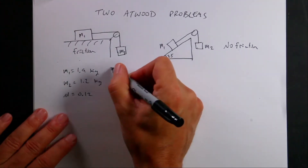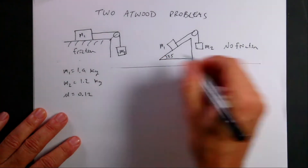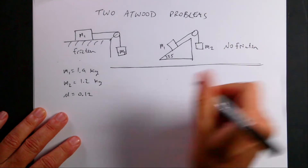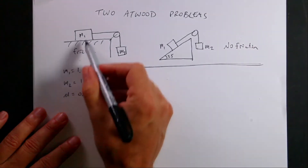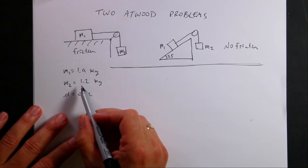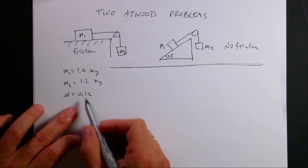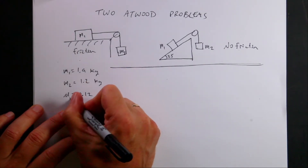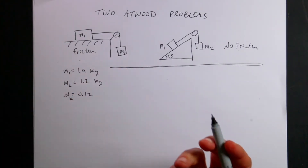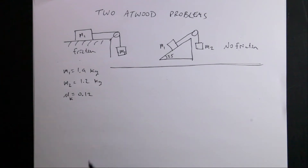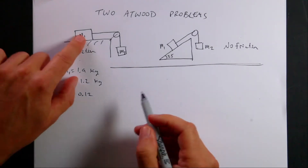For both cases, mass M1 is 1.9 kilograms and mass M2 is 1.2 kilograms. For the first case, the coefficient of kinetic friction — and we're going to assume it's already sliding — is 0.12.